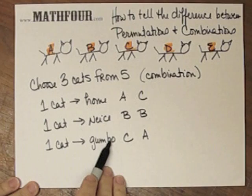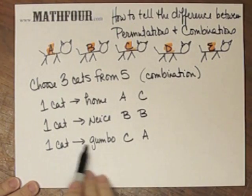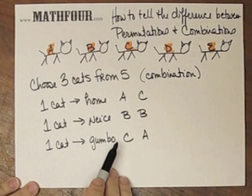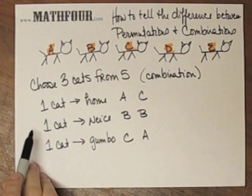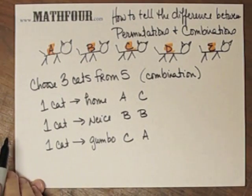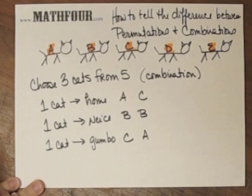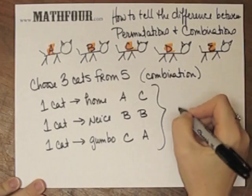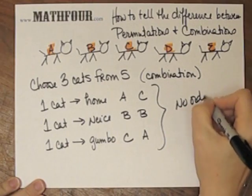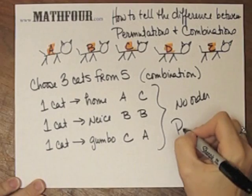Now, is there an order? Well, you would think that the gumbo cat is probably at the bottom of the order if there is an order, but who knows? Am I a better cat owner than my niece or vice versa? So there's not really any order here. So there's no order, but it's still a permutation.